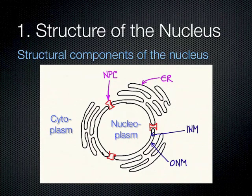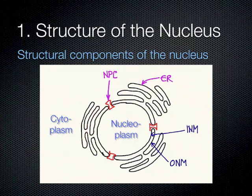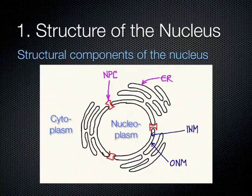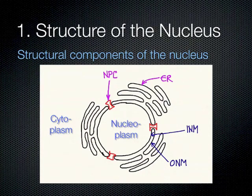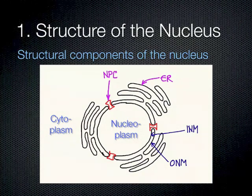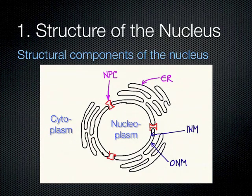Notice how the inner nuclear membrane and the outer nuclear membrane are continuous — they actually touch each other and are components of the same membrane. However, they only touch at the level of the nuclear pore complex. Nuclear pore complexes are located right where the outer nuclear membrane meets the inner nuclear membrane. An extra important feature is that the outer nuclear membrane is continuous with the membranes of the endoplasmic reticulum (ER).